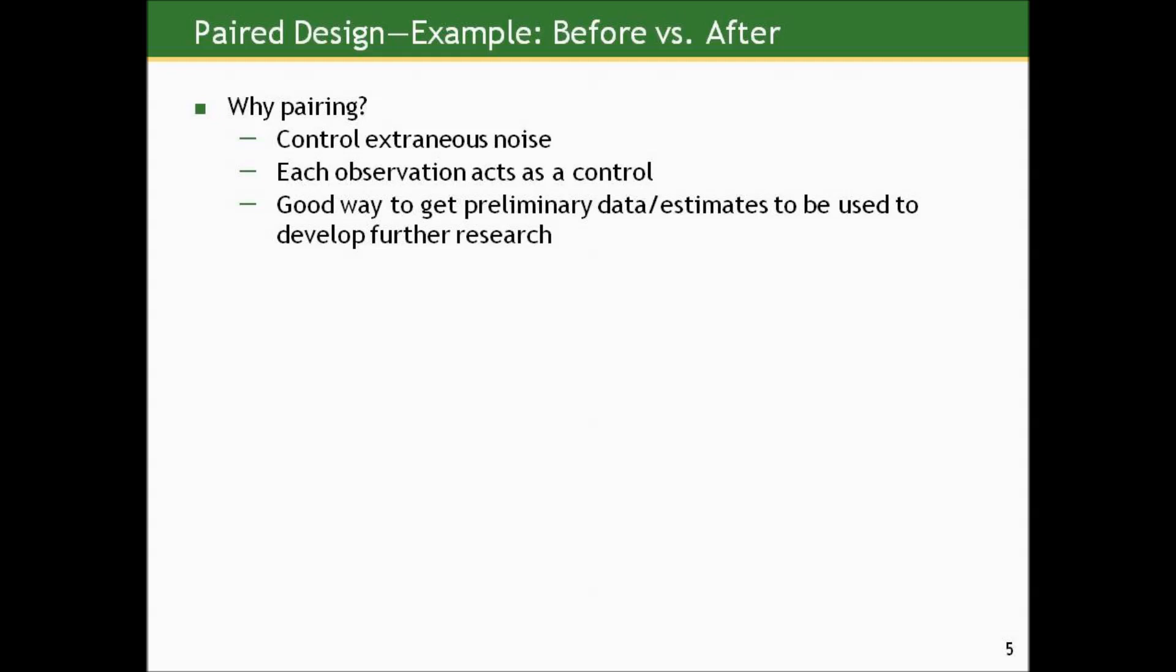Why is pairing sometimes done in studies? It controls extraneous noise in some sense because each person acts as their own control. For example, in a before-after study, the idea is that the other characteristics of the person whose measurements are being taken before and after some sort of intervention or stress are similar. One of the only variables in that process is the introduction of the intervention or not. These are also good ways to get preliminary data or estimates to be used to develop further research.